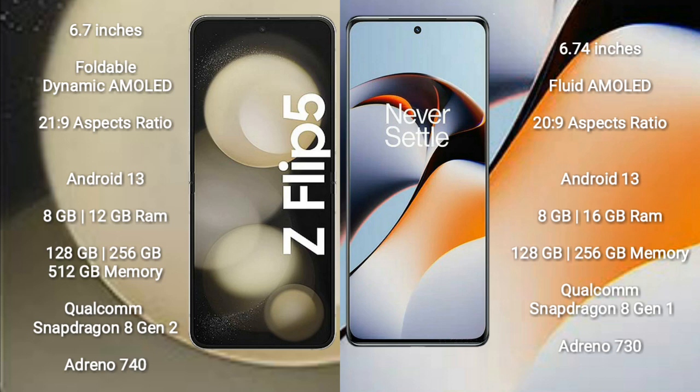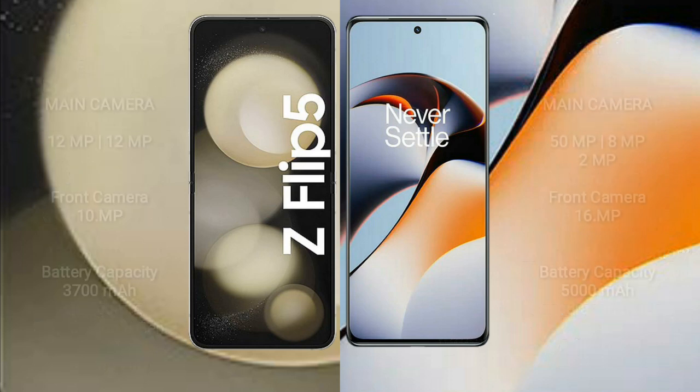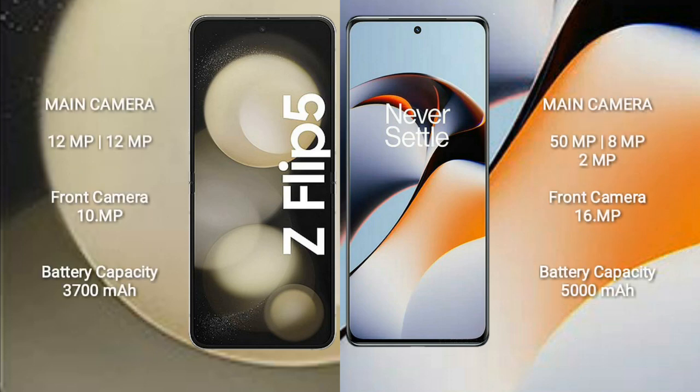OnePlus 11R comes with 8GB or 16GB RAM, 128GB or 256GB internal storage, a Qualcomm Snapdragon 8 Gen 1 processor, and GPU Adreno 730.